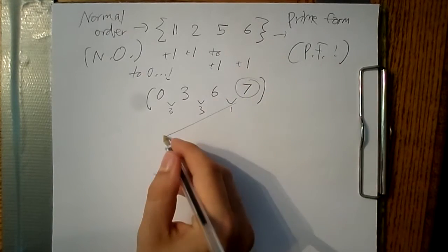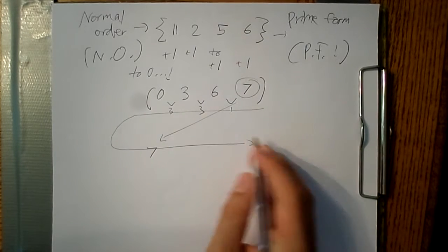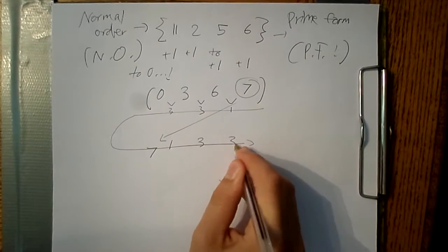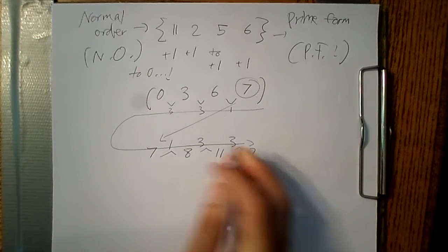Now, when we write it backwards, we start on the 7 and head in the opposite direction. This is to check the inversion. And then we have 7, 8, 11, 2.